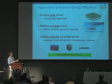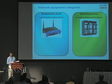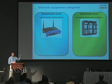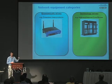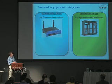My focus is reducing the peak power of my routers, because there's much more opportunity there. Looking at two kinds of products: economically-driven products like little wireless home routers — defined by a shelf price of $39.95 — and performance-driven products like internet core routers — defined by having enough capacity to meet requirements. Making economically-driven products more efficient, say by spending another dollar on the power supply, causes major cost issues.